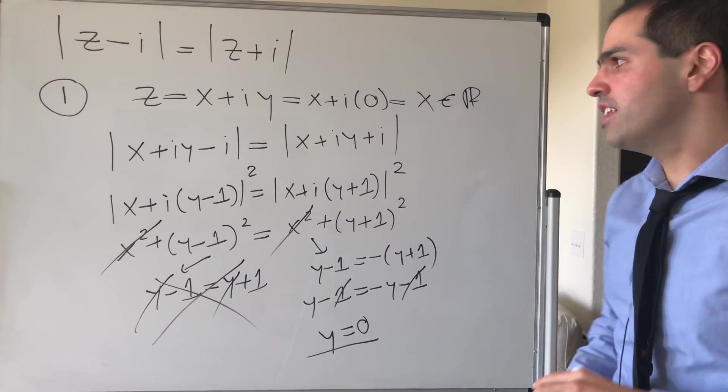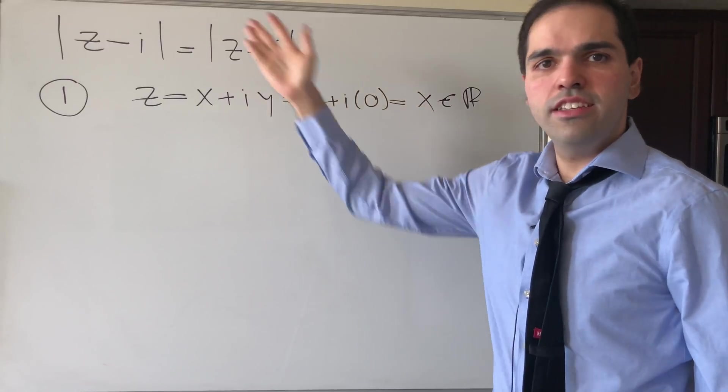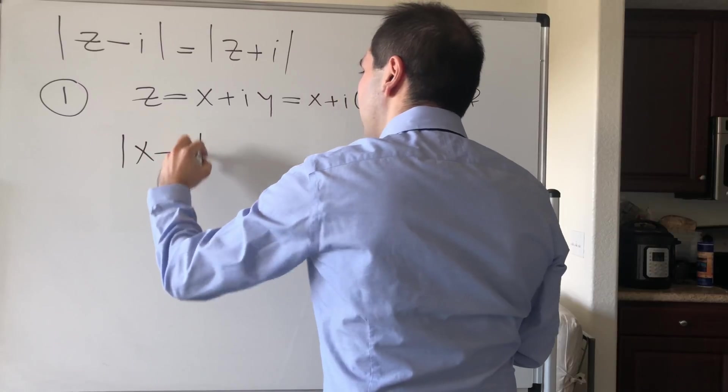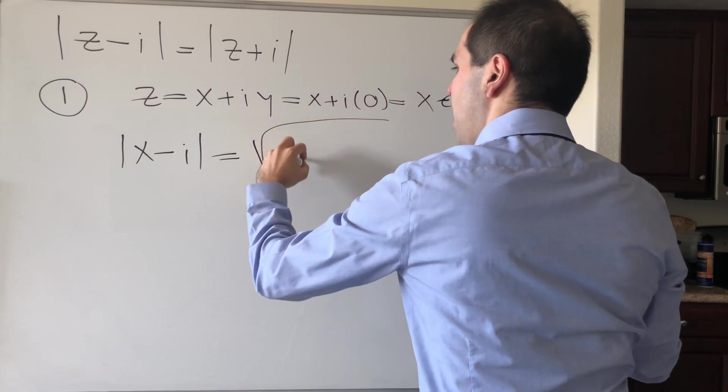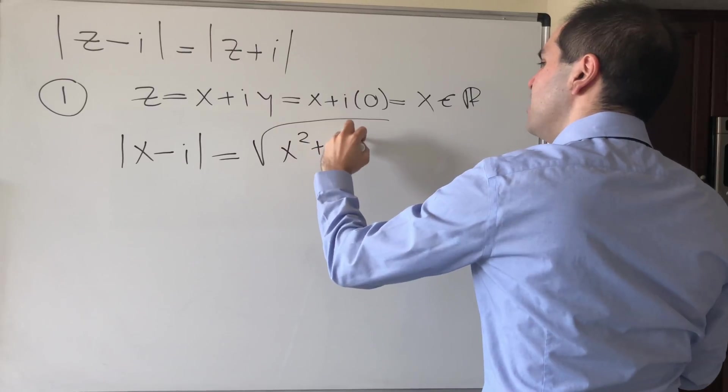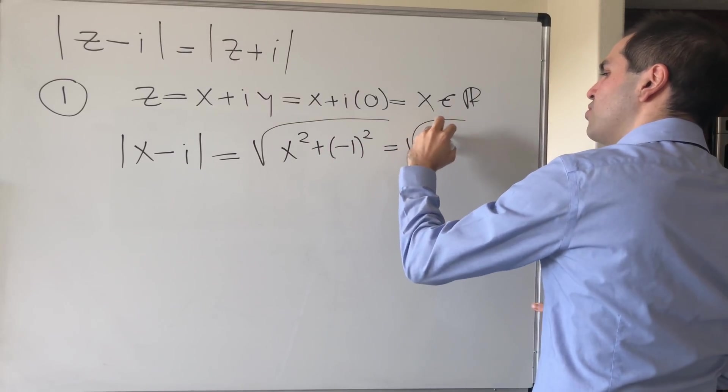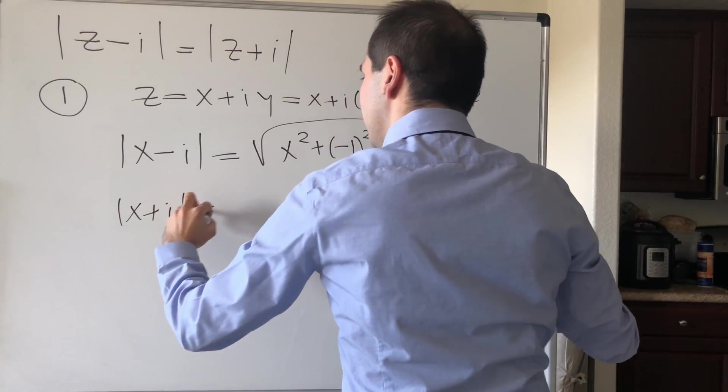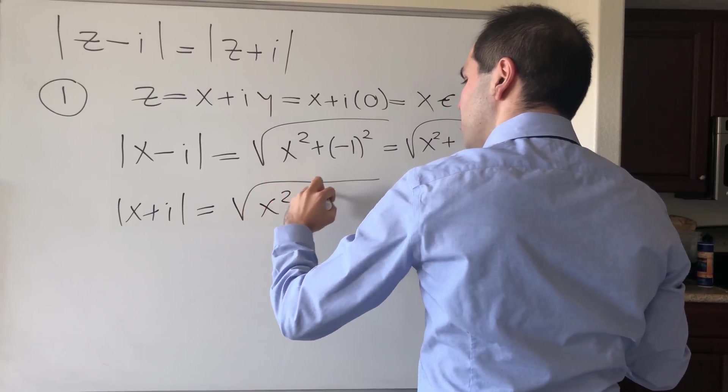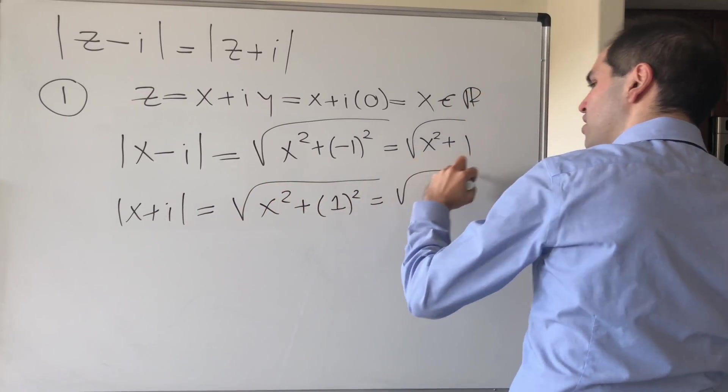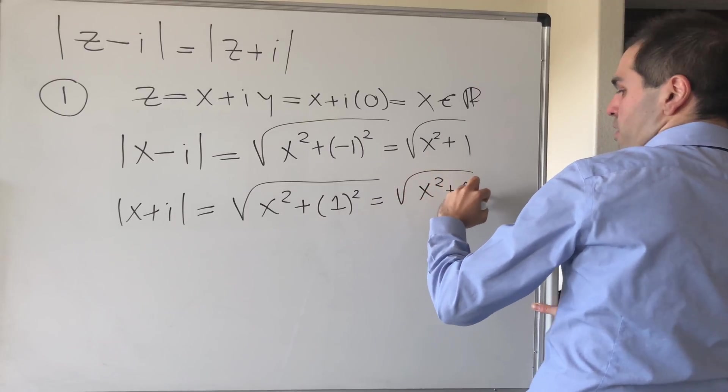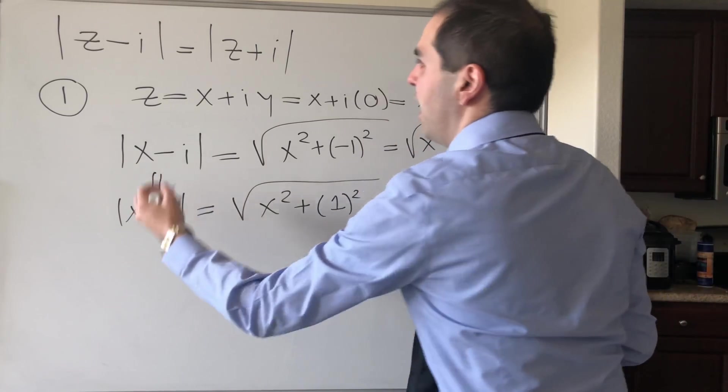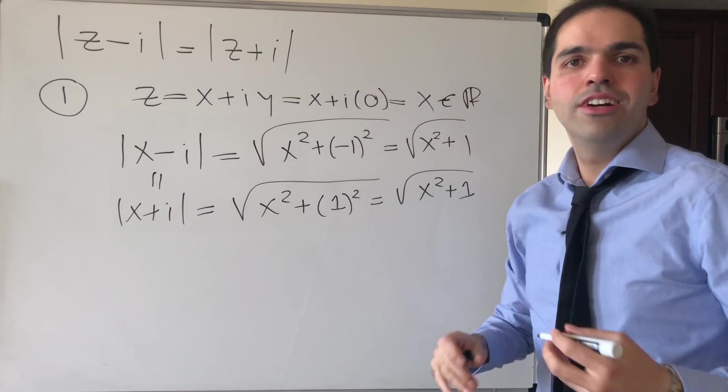And in fact, you can check that this in fact works, because, well, what if z is real? Then what does this become? Then on the one hand, x minus i, that becomes square root of x squared plus minus 1 squared and becomes square root of x squared plus 1. On the other hand, absolute value of x plus i, that becomes square root of x squared plus 1 squared, and that's square root of x squared plus 1 squared, or x squared plus 1. And indeed, both of those things are the same. Any solution to this equation are the real numbers.